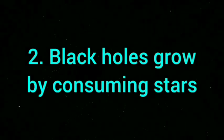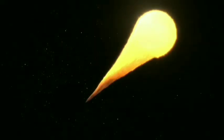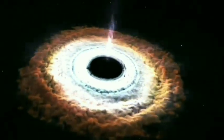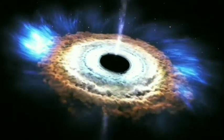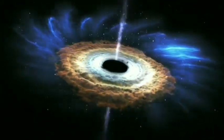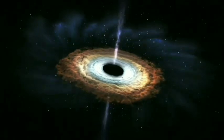Black holes grow by consuming stars. Black holes grow in size by consuming matter from stars and planets that orbit too close to them. The matter gets sucked into the black hole's event horizon, which is the point of no return beyond which nothing can escape.